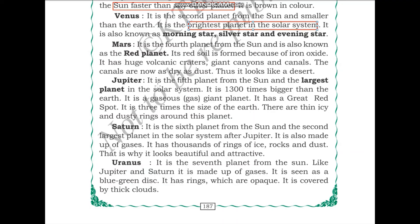Mars is the fourth planet from the sun and is also known as the red planet. It is red because its soil contains iron oxide. Mars has huge volcanic craters, giant canyons, and canals — the canals are now as dry as dust. There are theories that water could have existed on Mars, but now it looks like a desert.